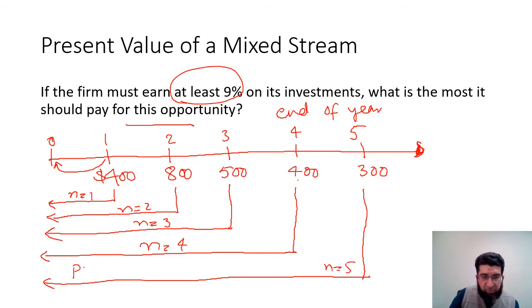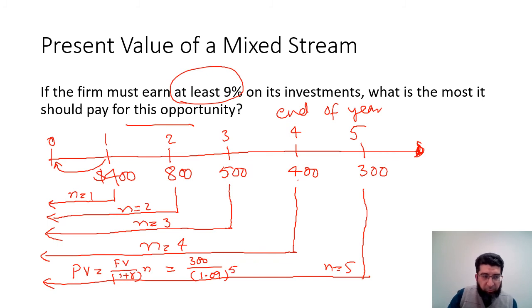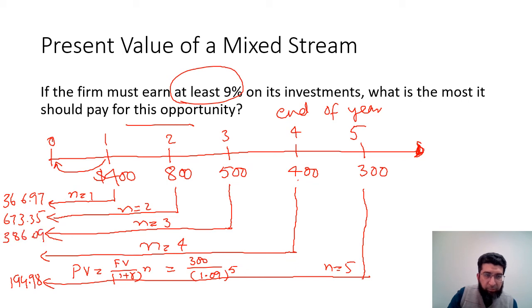The present value formula is: PV = FV ÷ (1 + r)^n. For n equals five, substituting $300 over 1.09 raised to the power five gives $194.98. The second cash flow of $800 discounted gives $673.35; the third cash flow gives $386.09; and the fourth gives $283.37. The first cash flow of $400 discounted for one period gives $366.97.